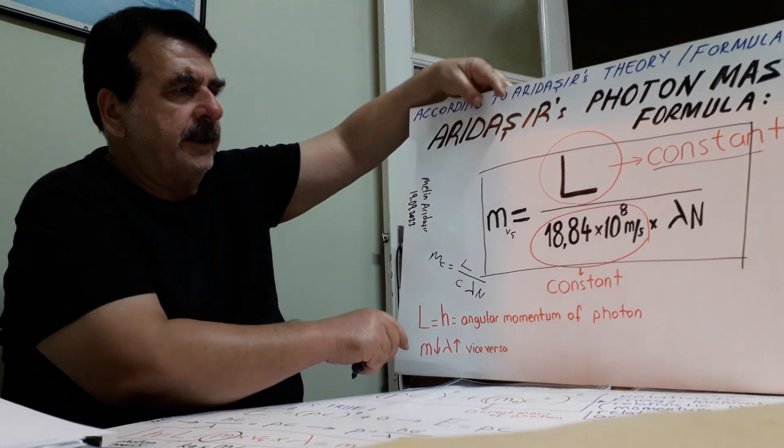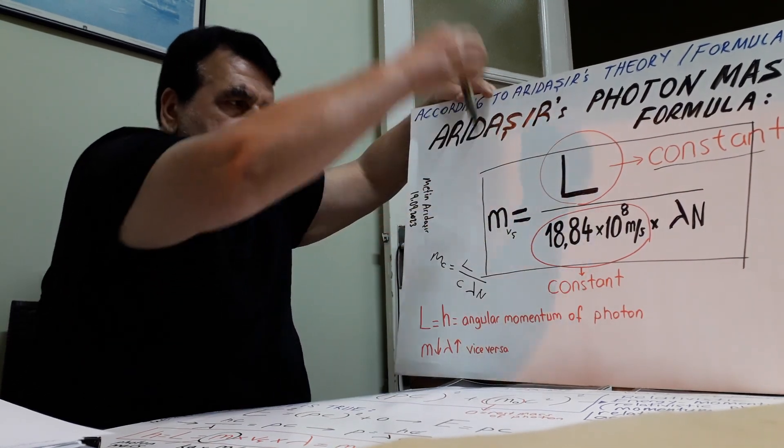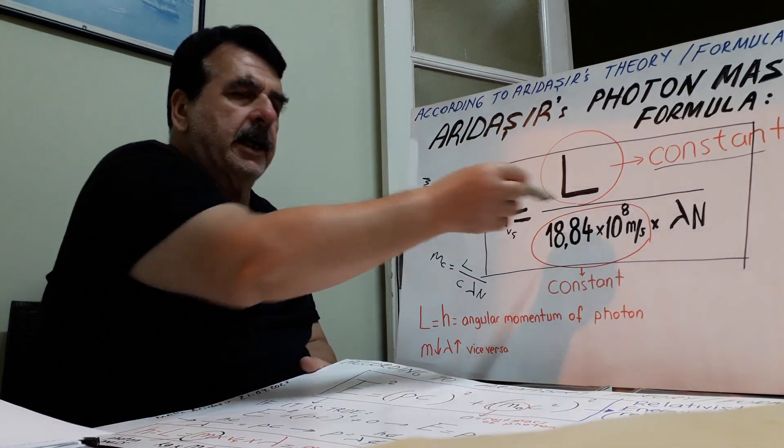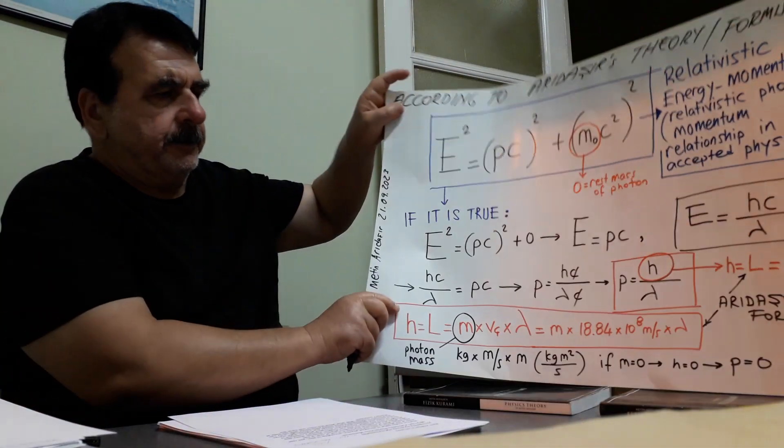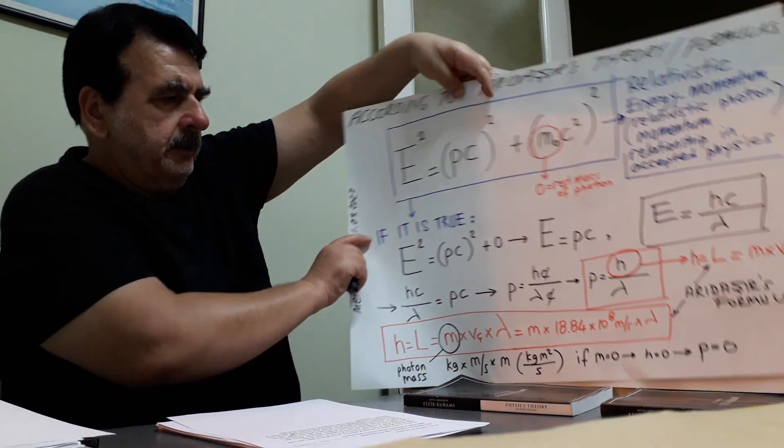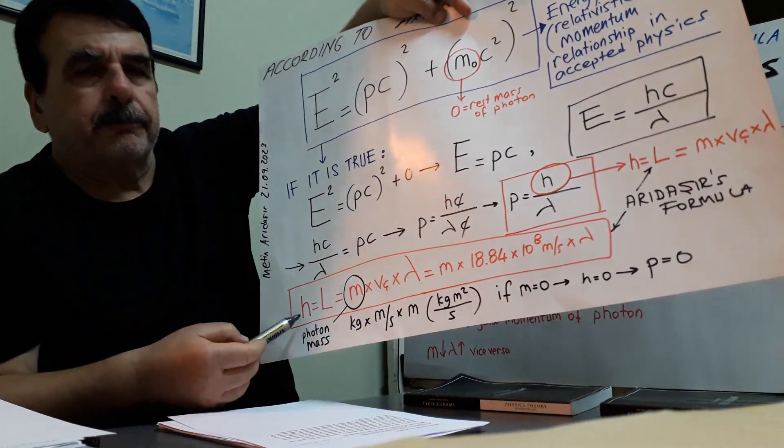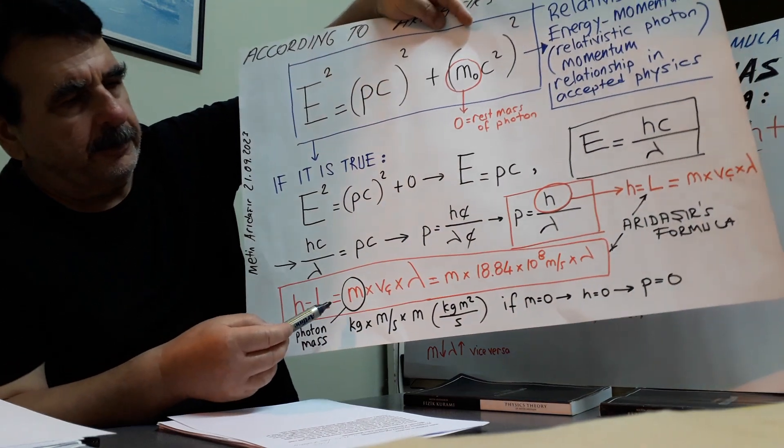This is mc is equal to L divided by c lambda mc. In each case, this is main case, linear velocity component case. Angular momentum is constant. Here, my angular momentum formula is equal to Planck's constant.